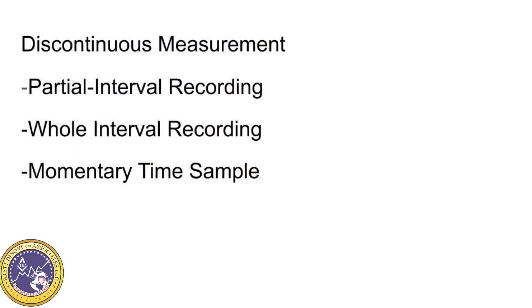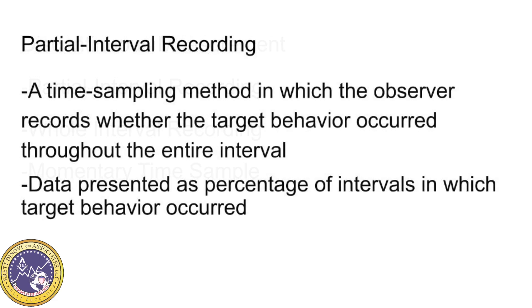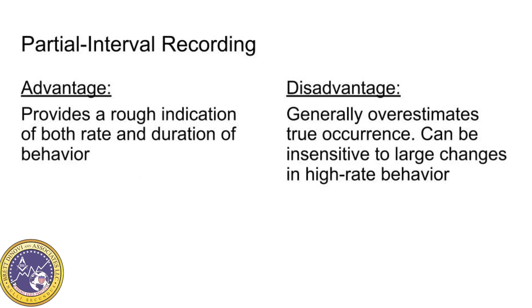There are three types of discontinuous measurement systems: partial interval recording, whole interval recording, and momentary time samples. Partial interval recording is a time sampling method in which the observer records whether the target behavior occurred at any point during a specified interval. Data are presented as a percentage of intervals in which target behaviors occurred. An advantage is that it provides a rough indication of both rate and duration of behavior. A disadvantage is that it generally overestimates true occurrence and can be insensitive to large changes in high-rate behavior. Although the most common interval in the literature is 10-second partial interval recording, it still tends to overestimate actual behavior. Because of this, practitioners should select partial interval recording for behaviors targeted for decrease rather than for increase.